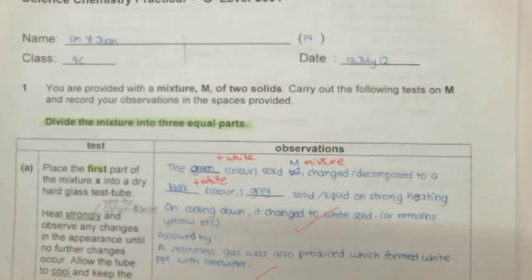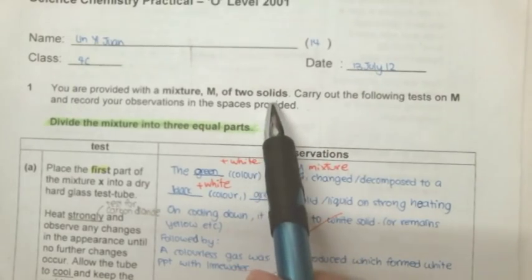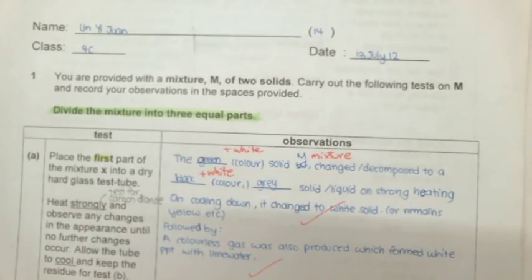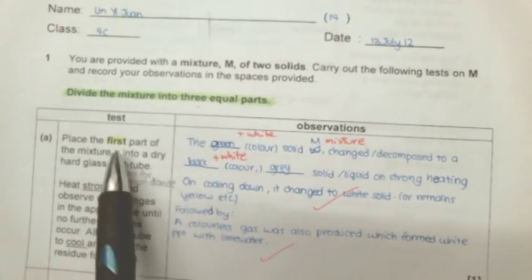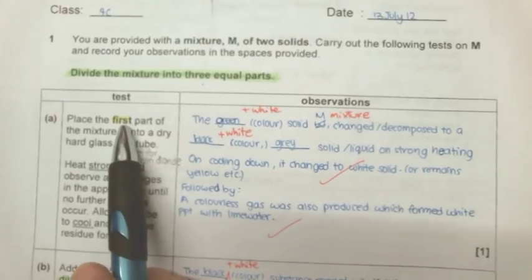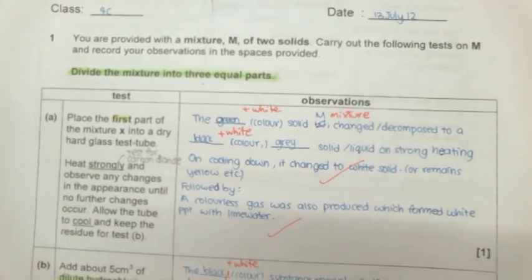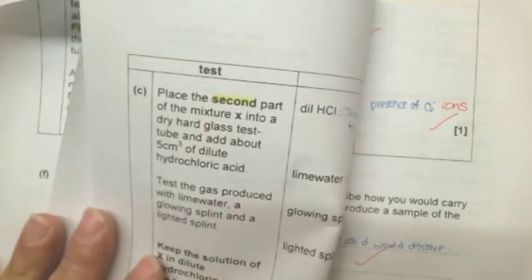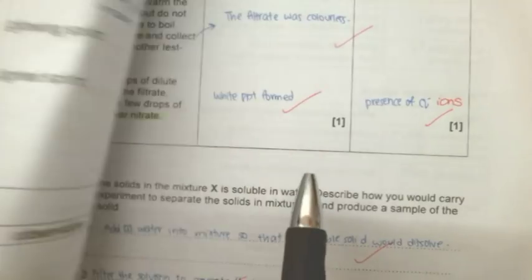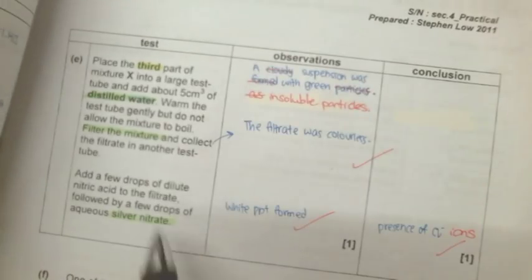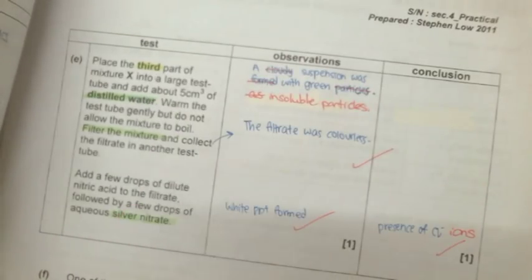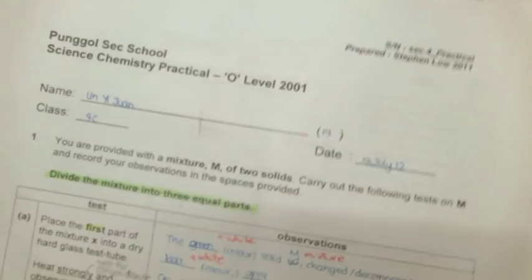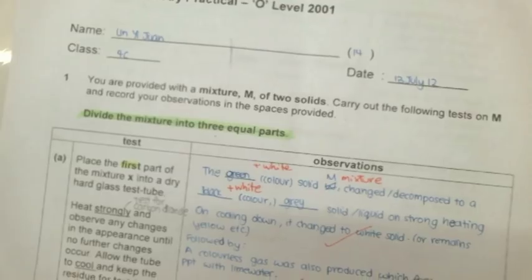You are given a mixture of two solids and you're supposed to divide the mixture into three equal parts. The first part can be found on A, the second part on page 2, and the third part of the mixture E is supposed to do the following practicals on them. Let's look at the first part.